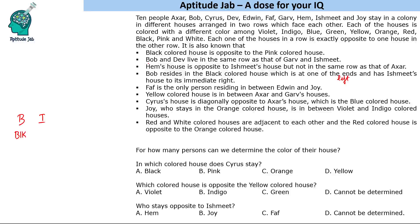We are also given that Bob and Dev live in the same row as Garb and Ishmid. So Bob, Dev, Garb, and Ishmid all four live in the same row. Also, the black coloured house is opposite to the pink coloured house, so the house opposite Bob's is the pink house.